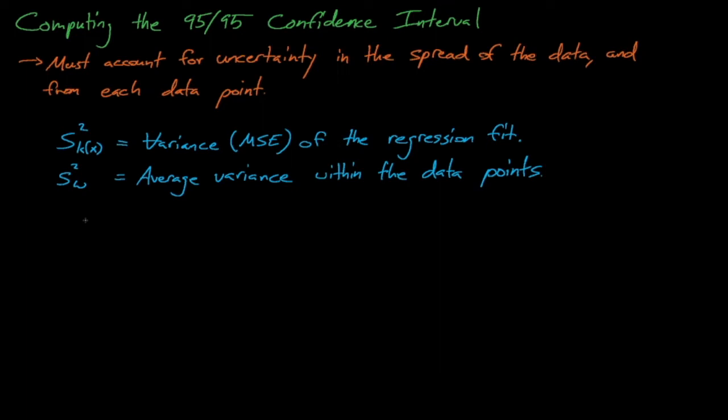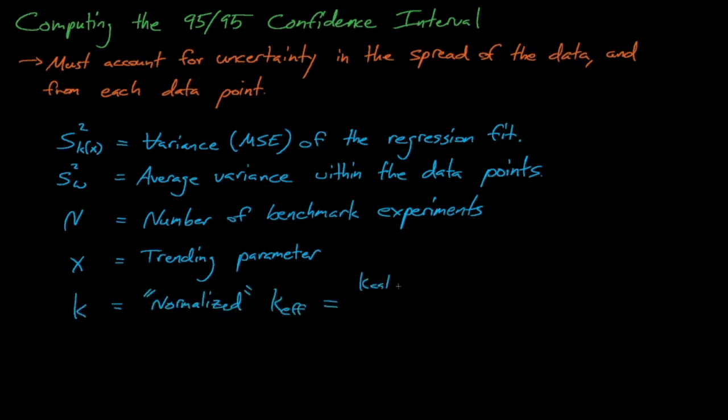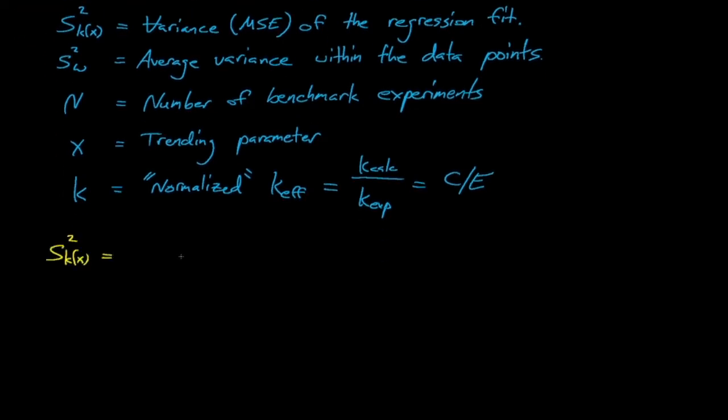If we were to wave a magic wand and reduce the error bars on each data point to zero, then we would reduce s_w to zero. Whereas if our data created an absolutely perfect fit with no deviation at all from the linear regression, then s_k of x would approach zero. So given that n equals the number of benchmark experiments available to us, x is our trending parameter of choice, and k equals the normalized k effective, which is just another name for the C over E value of the data, then we can use this equation to obtain the values of s_k of x and s_w.